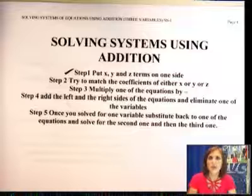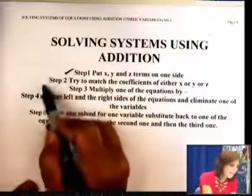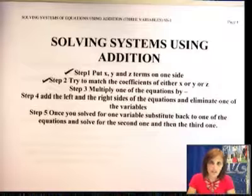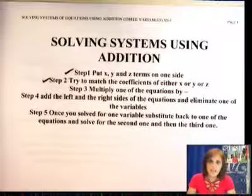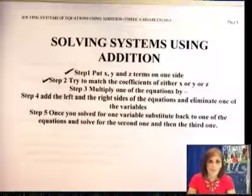For example, if we have 2X, we want to have negative 2X in the other equation. So we try to match it. Then we are going to add those two equations so that that coefficient that was the same in opposite sign kind of disappears. And we end up with one less variable than we started with.